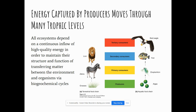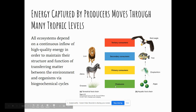Energy captured by producers — those plants — moves through many trophic levels. These plants are special because they perform photosynthesis and take in sunlight, and all ecosystems depend on the constant inflow of that energy from producers. Above producers we have primary consumers, like a zebra, then secondary consumers, like a lion. In some ecosystems you may also have a tertiary consumer, but in this food chain the lion has nothing eating it, so it would just be the secondary consumer.